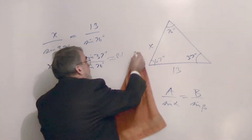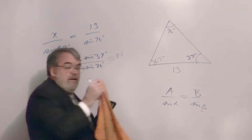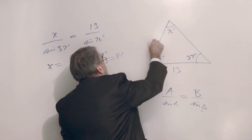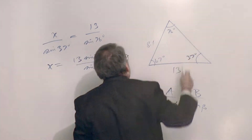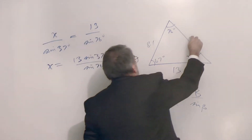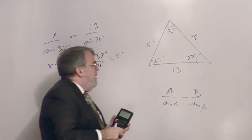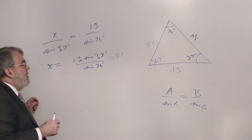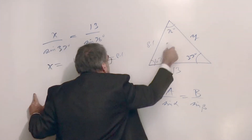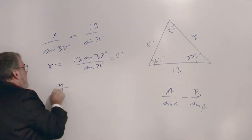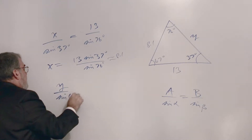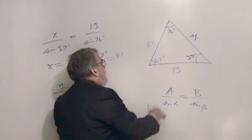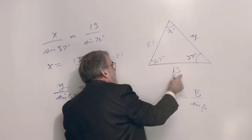Let's fill that in. Now I'm almost done with the triangle. To solve for this remaining side, I'll call it y. If I want to solve for y, I would do something quite similar: y over sine 67 degrees equals...